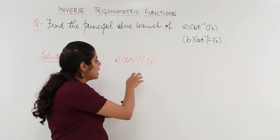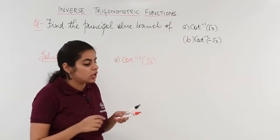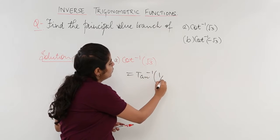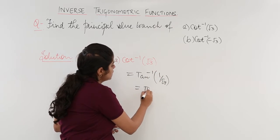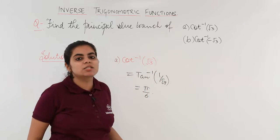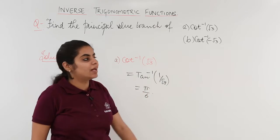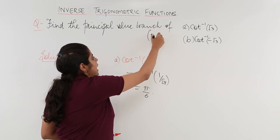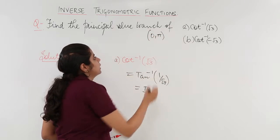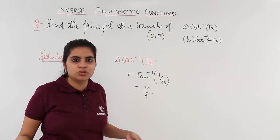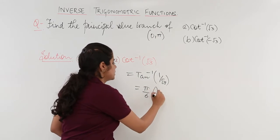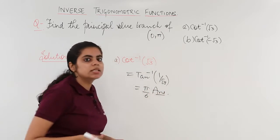So my answer to this would be similar to tan inverse 1 by root 3 which is nothing but π by 6. And does π by 6 lie in the principal value branch of cot inverse? Yes, because principal value branch as we learned from the table earlier is 0 to π. So there is no issue with it. My answer is clear. It is π by 6 which is the answer. But is the question finished?